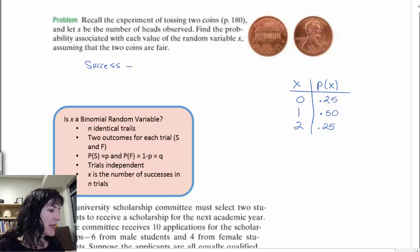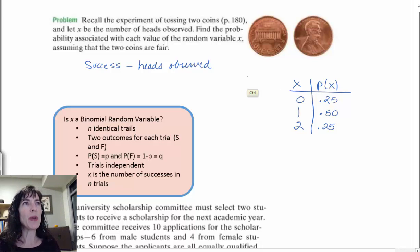We're defining success to be the number of heads observed. So here we're going to have to say heads observed for this example. And per trial, instead of thinking about both of the trials together, we're thinking about them independently. So, success will be observing a head on a single coin flip.